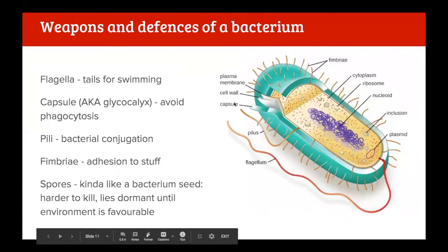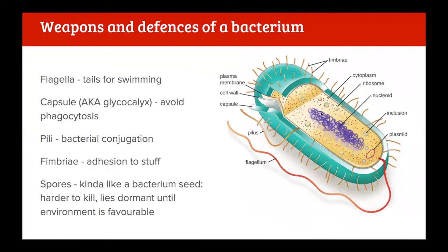Let's look at some other defenses bacteria have. Bacteria are prokaryotes, meaning they have a nucleoid in the center and small circular plasmids of DNA, but no membrane-bound organelles - just ribosomes floating around. They also have some external features. Sometimes they have a thick layer called the capsule, also known as the glycocalyx - a very thick layer of carbohydrates designed to protect against phagocytosis and to stop the bacteria from drying out.